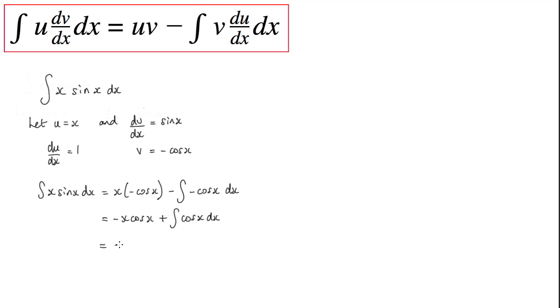So we've got minus x cos x, plus now the integral of cos x is sin x, so we get sin x plus our constant of integration. We could rearrange this if you want to sin x minus x cos x plus c.